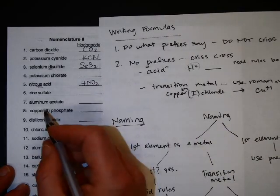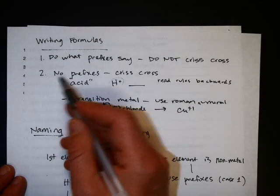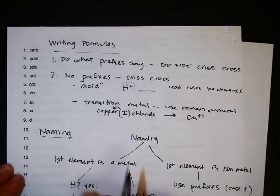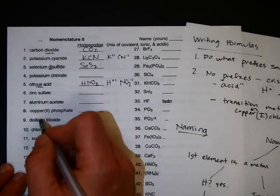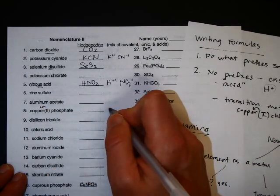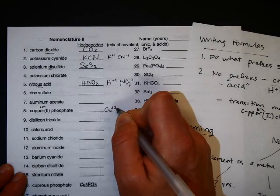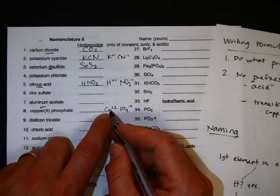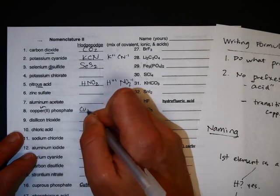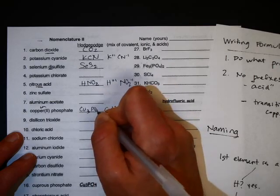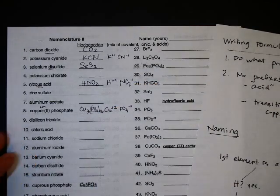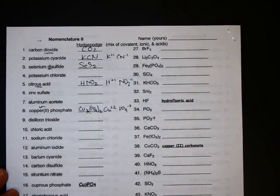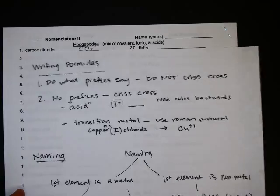If it has a Roman numeral, like number eight, you just do what it says. So there's no prefixes there, you just crisscross, and then the one is the charge on the copper in this example. Here it's a two, so that's the charge on copper. You want to use that to crisscross, so Cu plus two, and phosphate is PO4 minus three. This is found on the back of your polyatomic ion list, and you crisscross them to get Cu3(PO4)2.